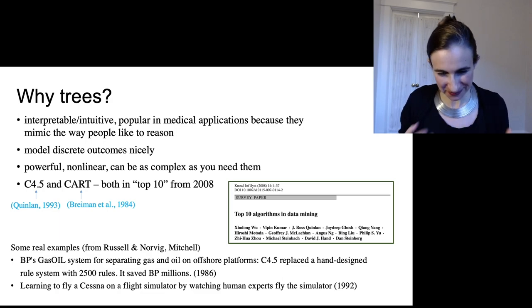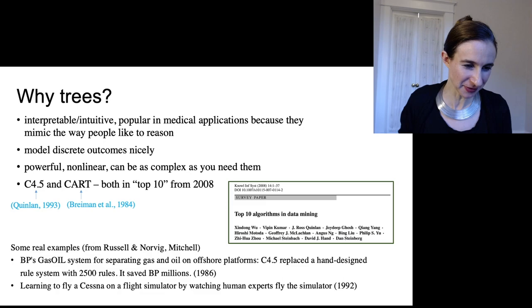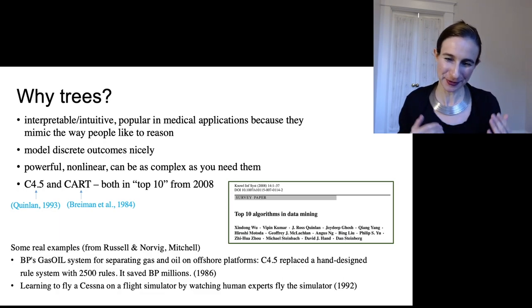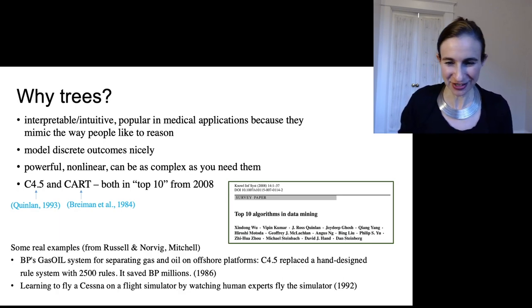There are some very cute historical examples of successes with decision trees. Here's one where British Petroleum had their system for separating gas and oil in an offshore platform, and they use C4.5 and it replaced a bunch of hand-designed rules and saved the company millions of dollars. Then there's another example of learning how to fly a plane on a flight simulator in 1992.